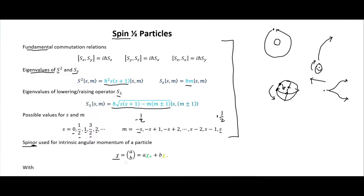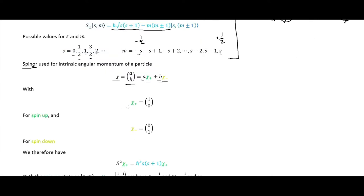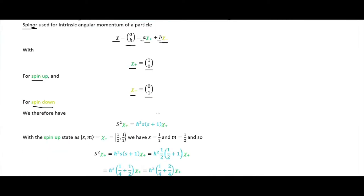A spinor is a two-component vector. We have chi-plus and chi-minus as the basis spinors, with components a and b. We use chi-plus represented as the column vector (1, 0) and chi-minus as (0, 1) for our basis. Each of these basis spinors corresponds to spin-up and spin-down respectively.